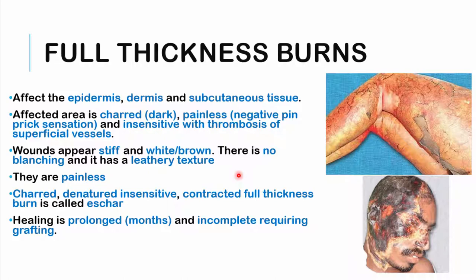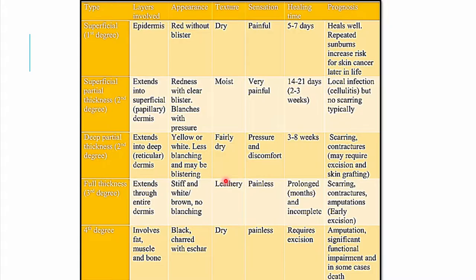Full thickness burns affect the epidermis, dermis, and subcutaneous tissue. The area may appear charred and dark. They are painless because nerves in the dermis are damaged — no response to pricking. The skin is insensitive with possible thrombosis in superficial vessels. Wounds appear stiff, white or brownish, with a leather-like texture, no blanching, no blistering. Contracted, charred, insensate full thickness burns on limbs are called eschar. These take months to heal, may heal incompletely, and often require skin grafting.